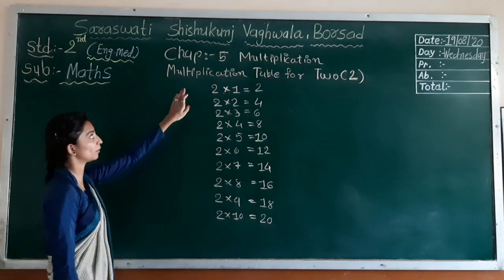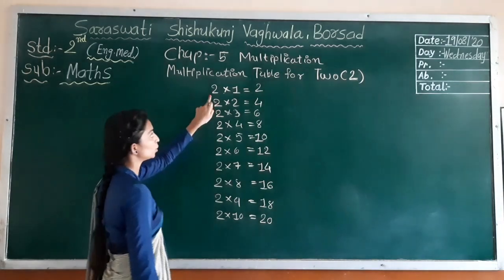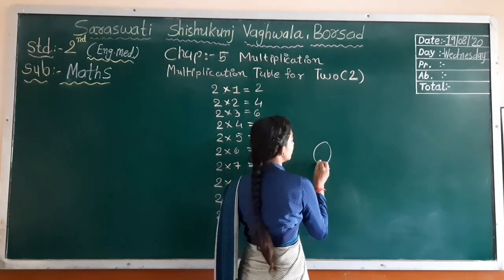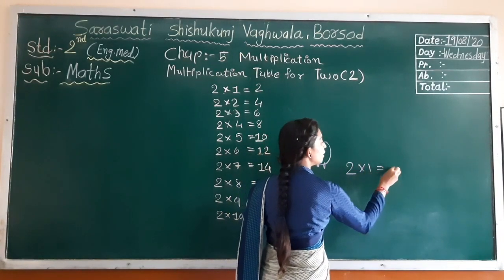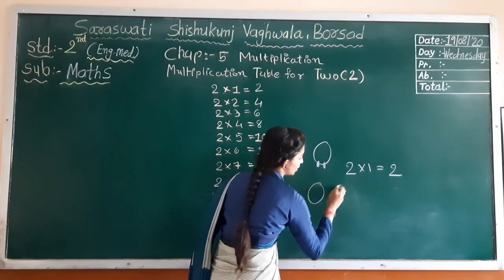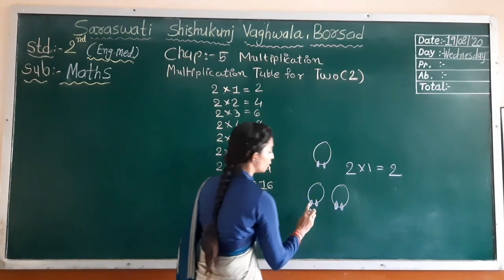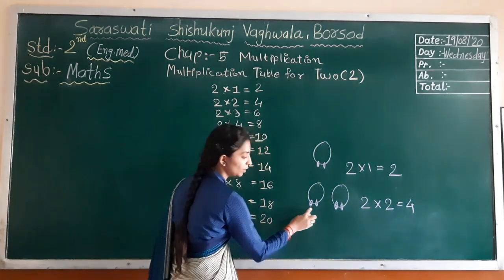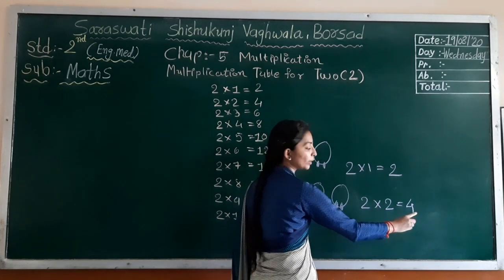Now students, let's see another table for multiplication — the multiplication table for two. Two multiplied by one: two ones are two. See here, I have taken one mango — in one mango, two stones are taken. Two stones taken one time, so two ones are two, one mango, one time, so two ones are two.